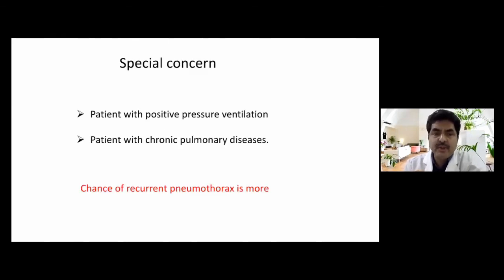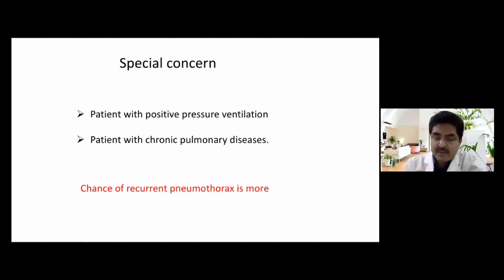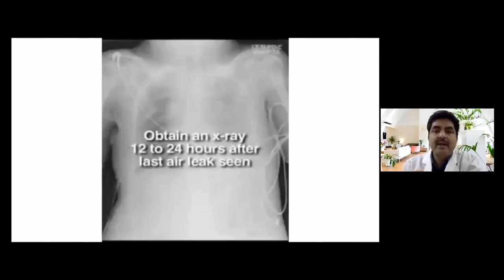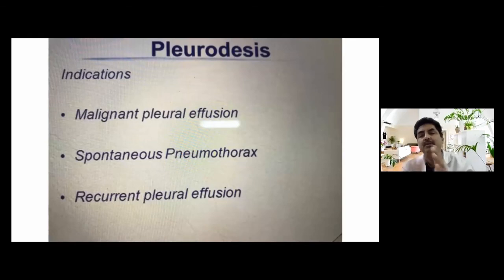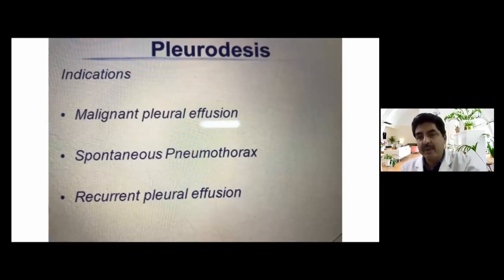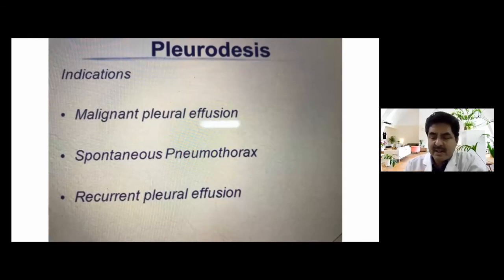Special concerns apply for patients on positive pressure ventilation and those with chronic pulmonary disease, who have a higher chance of recurrent pneumothorax. A control film must be taken after 12 to 24 hours of removal. For persistent air leak, recurrent or malignant pleural effusion, or spontaneous pneumothorax, pleurodesis may be needed.